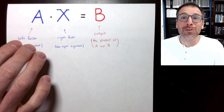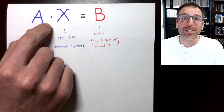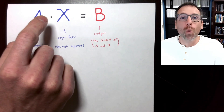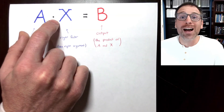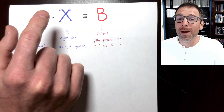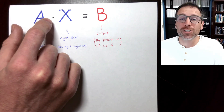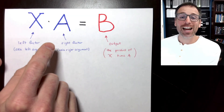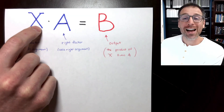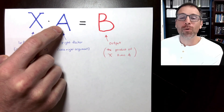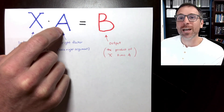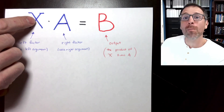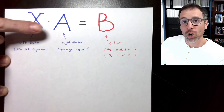That leads into the community challenges for this video. The first challenge: make a guess about when we would want to use right matrix-matrix multiplication. What type of operations would align with multiplying A on the right? If you want a hint, go back to our lesson on matrix-vector multiplication — there are similar ideas there. The second challenge is to guess when we would want to use left matrix-matrix multiplication.